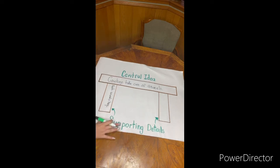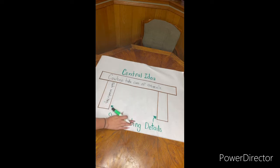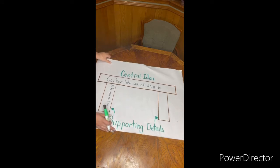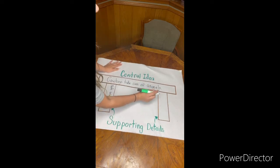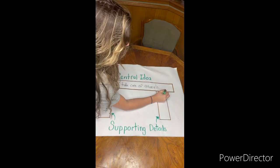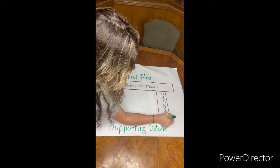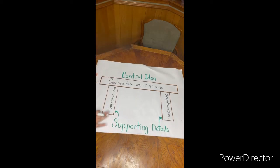Go ahead and talk with your partner about that other supporting detail. Someone raise your hand and tell me what their partner said. That's right, he changes their horseshoe. So let's go ahead and write that right here. And that is how we fill out our central idea and supporting details table.